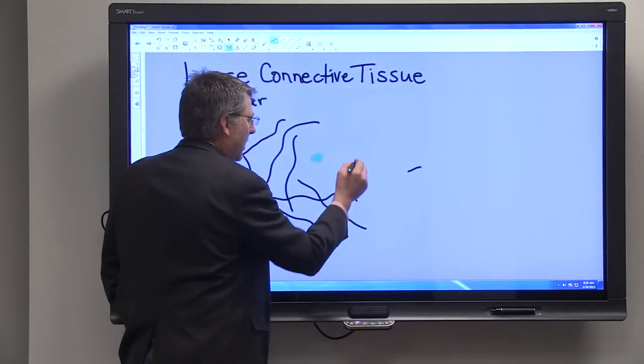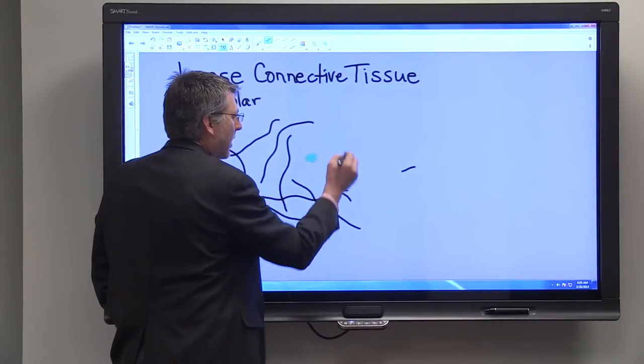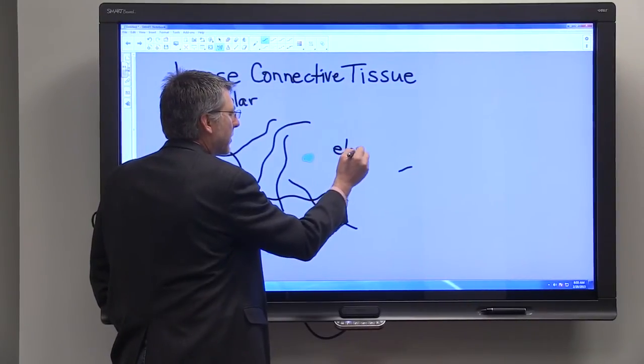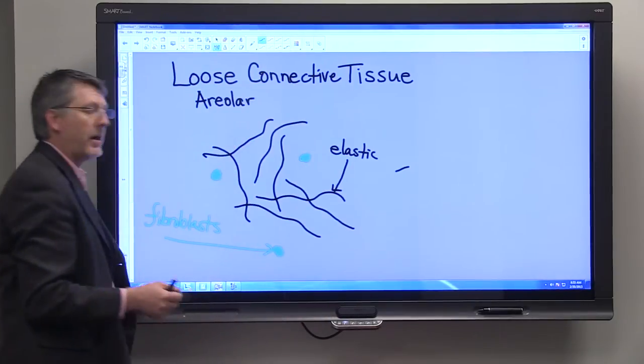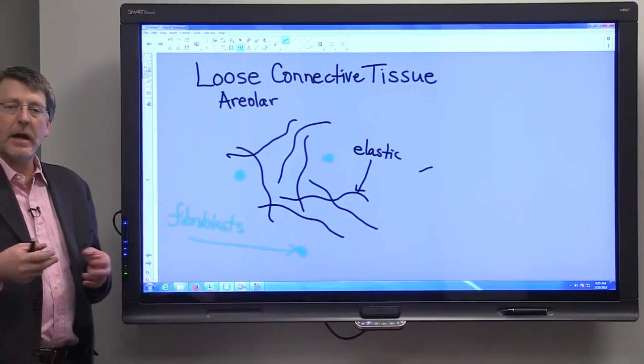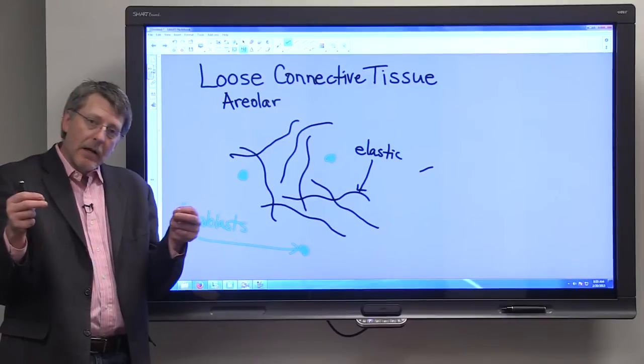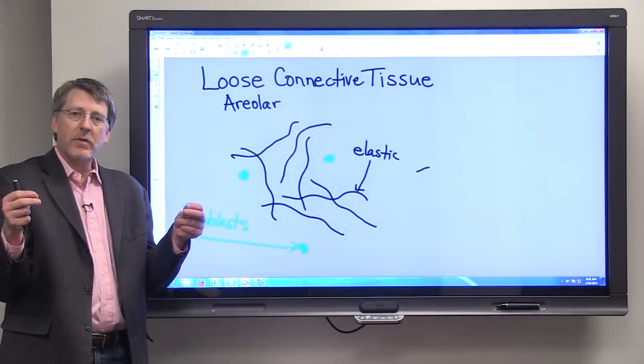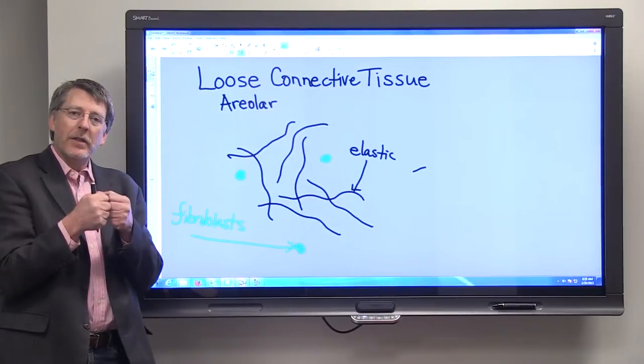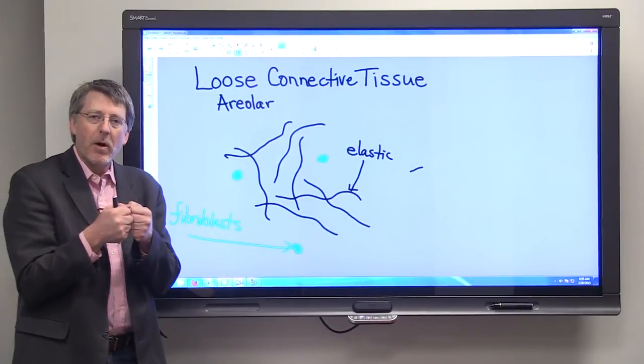The thin black fibers are the elastic fibers. Earlier we said that the elastic fibers are made out of a protein called elastin, and if they have a force applied to them, they'll stretch, but when you let them go, they'll recoil. And the recoil part is important.